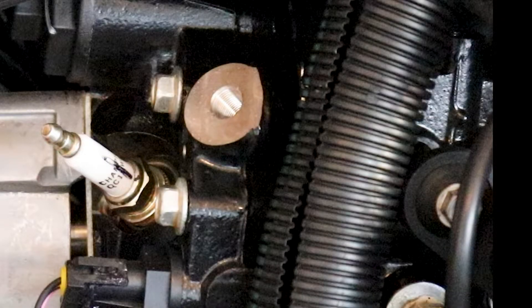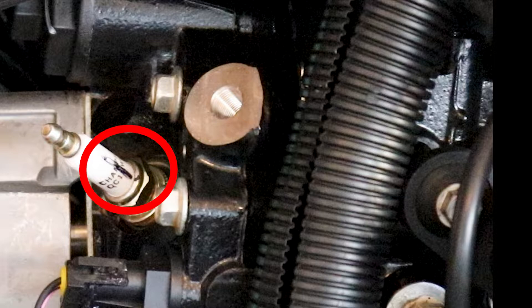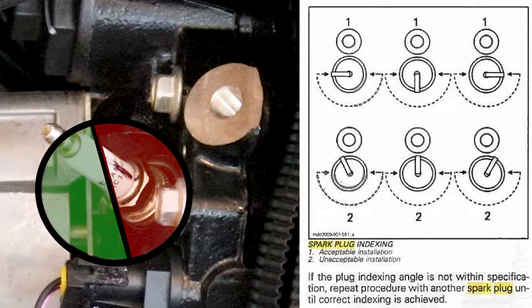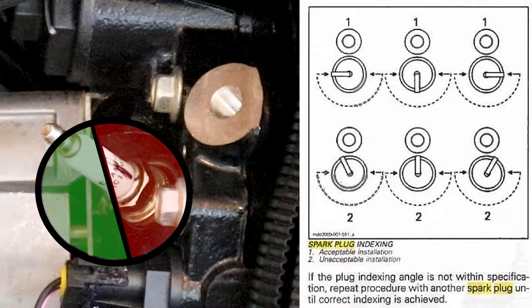After torquing our spark plug to 15 foot-pounds, we can see the indexing mark is not in line with the injector pin, which means this plug is not properly indexed. Now the ETEC does have a generous standard for acceptable indexing. The manual allows for the plug to index within 90 degrees of either side of the injector pin. That means our plug indexing mark can land anywhere within a 180-degree arc and still meet specifications.